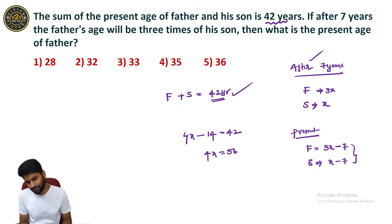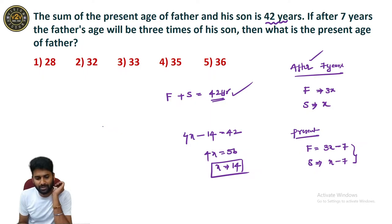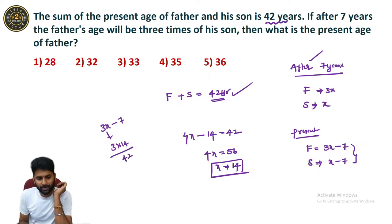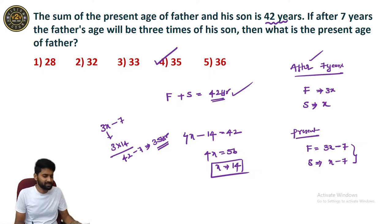4x − 14 = 42, so 4x = 56, giving x = 14. The present age of father is 3x − 7 = 3(14) − 7 = 42 − 7 = 35. The present age of father is 35 years.